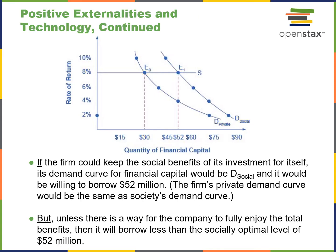If the firm could derive the complete social benefit, then they would probably spend 52 million, but that's not likely. So the firm will borrow less than the social optimal level of 52 million.